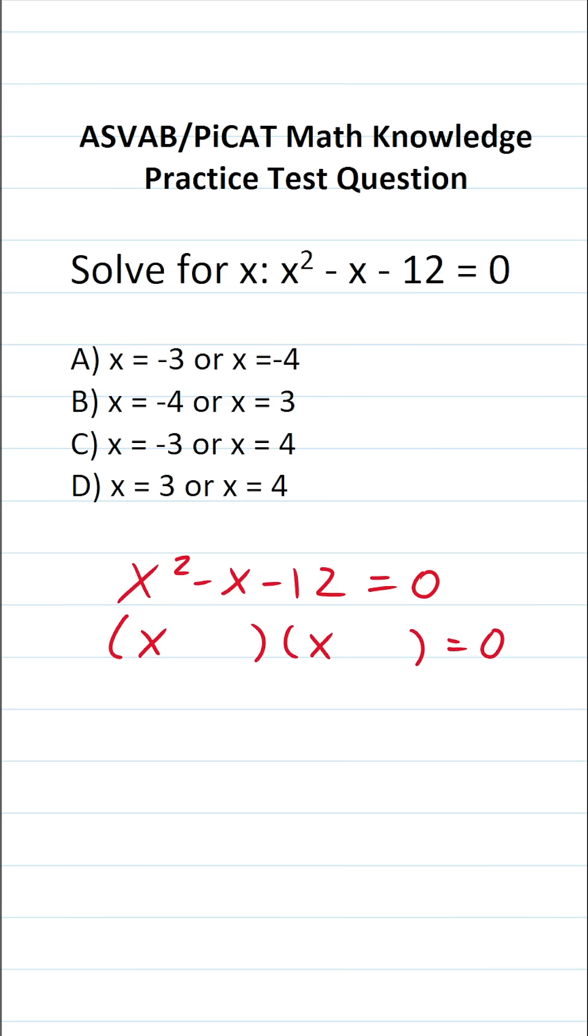Now, I know many of you can factor this one pretty quickly mentally, but if you haven't factored something in a long time, let me refresh your memory as to how you do it. We're looking for two numbers that multiply to negative 12, but add to negative 1, and we get that negative 1 from right here.